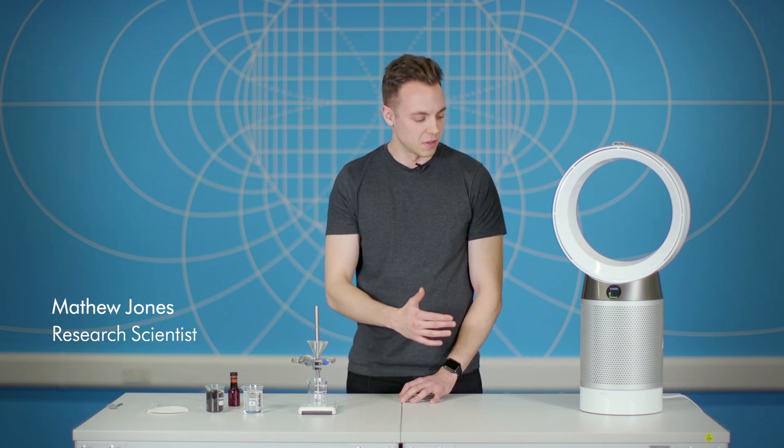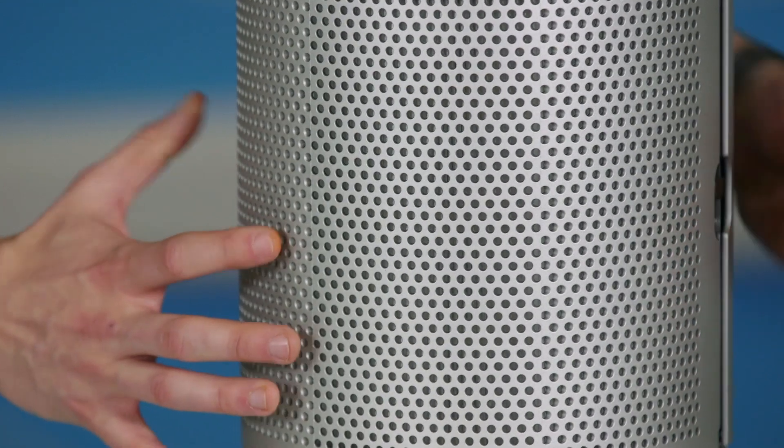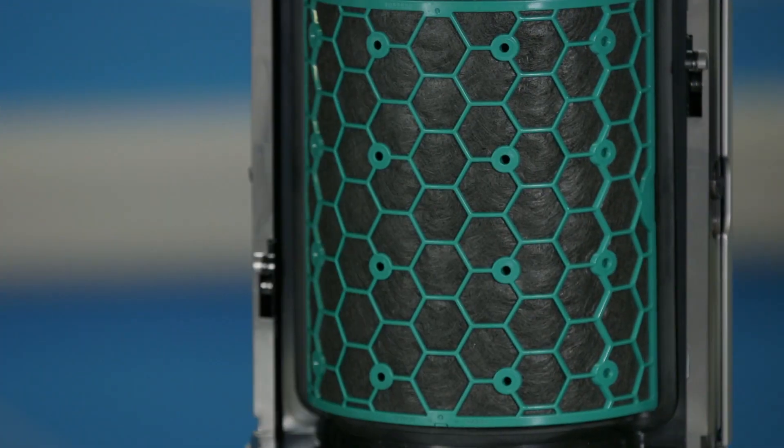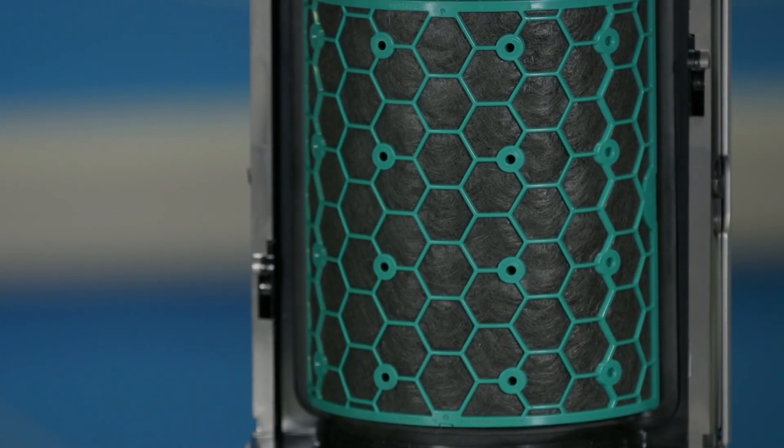Hi, I'm Matt and I'm a research scientist here at Dyson. The Dyson Pure Cool, which you can see here in front of me, contains an activated carbon filter. It's designed to capture harmful gases from the air that we breathe.